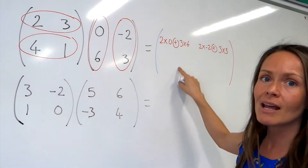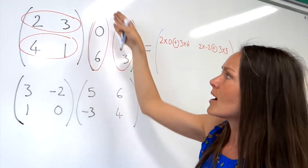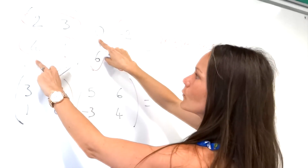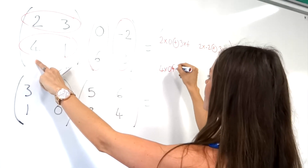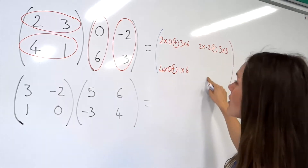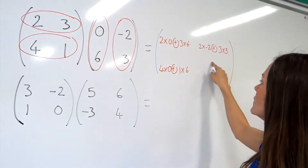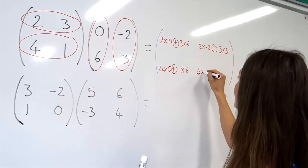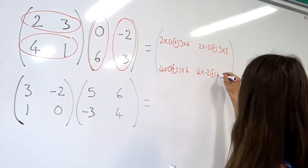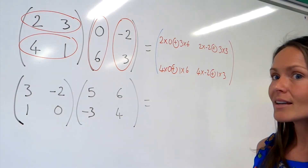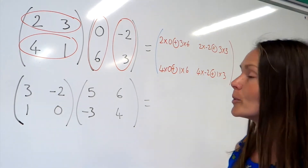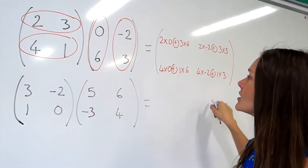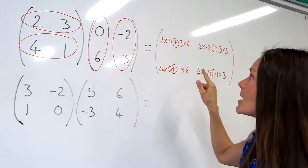For the bottom left element, we're going to use the bottom row and the left column, going from left to right and from top to bottom. So I'm doing 4 times 0 plus 1 times 6. And for the last one, I'm going to use the bottom row and the right column to find the bottom right element: 4 multiplied by minus 2 plus 1 multiplied by 3. The better you get at these, the quicker you'll become and you won't necessarily need to write down all of this working out. This is just to help you see how I'm getting from the setup to the answer.